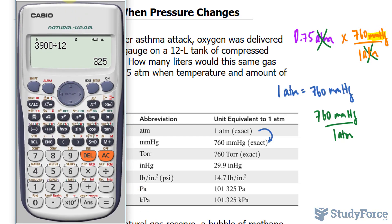Okay, so we'll take our calculator. 0.75 times 760.